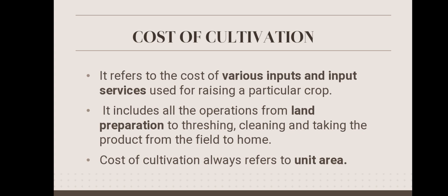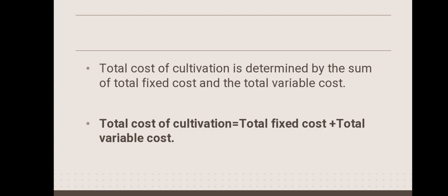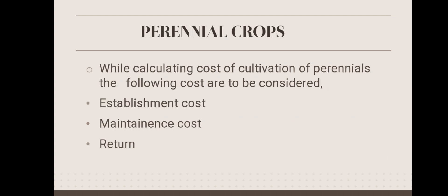processes from land preparation to threshing, cleaning, and taking the product from field to home. Cost of cultivation always refers to unit area. Total cost of cultivation can be found out as the sum total of fixed cost and variable cost.